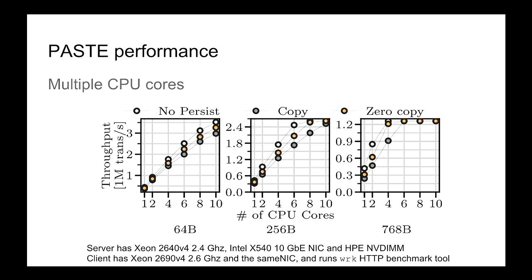For multi-core scalability, the x-axis shows number of CPU cores and the y-axis shows millions of transactions per second. We compare: no-persist (just consuming data), copy (storing via memory copy), and zero-copy (directly DMAing into NVM). Throughput flattens where it hits the 10 Gbps line rate. In all cases, performance scales well up to at least 10 CPU cores — multi-core scalability is pretty good.